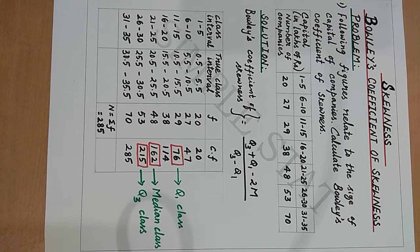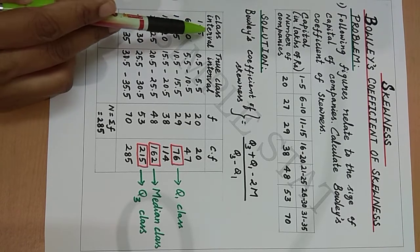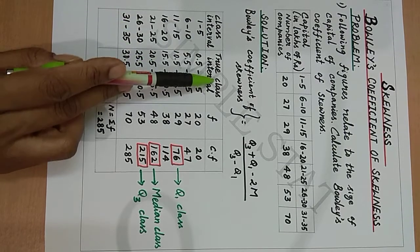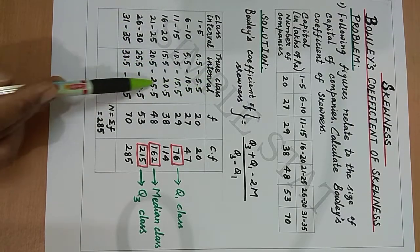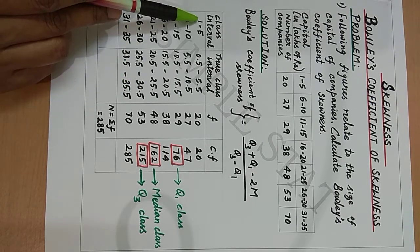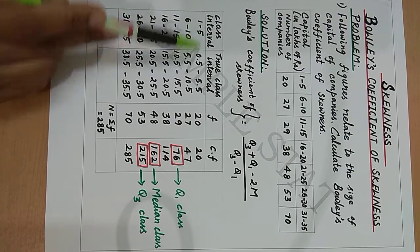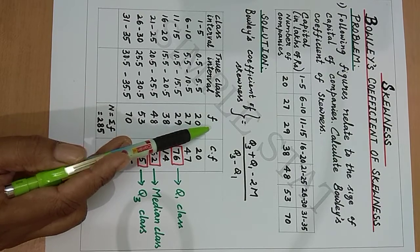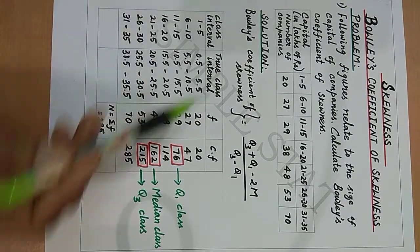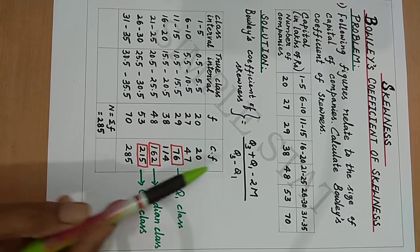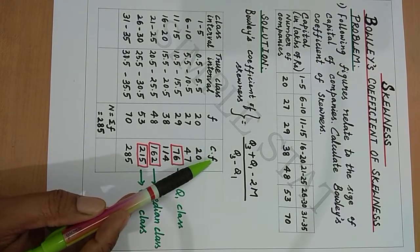Therefore let's proceed with the tabulation. Here we are given inclusive type class intervals. Therefore we have to find the true class interval, which is obtained by subtracting 0.5 from the lower limit and adding 0.5 to the upper limit. Now write the given frequency values, which is the number of companies here, and add the values denoted by capital N. We have N equal to summation F = 285. Then find out the cumulative frequency values.